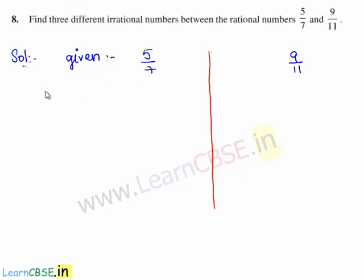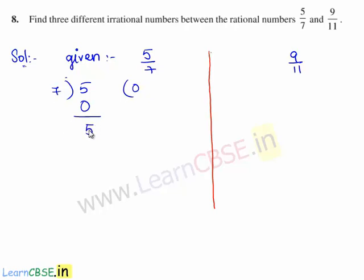Let us consider 5 by 7. We divide 5 by 7, so 7 is the divisor and 5 is the dividend. 7 does not go into 5, therefore we take 0. 7 times 0 is 0, so 5 minus 0 is 5. Since 7 does not go into 5 again, we take a decimal point and now 5 becomes 50. 7 goes into 50 seven times. So 7 times 7 is 49, and we are left with a remainder of 1.